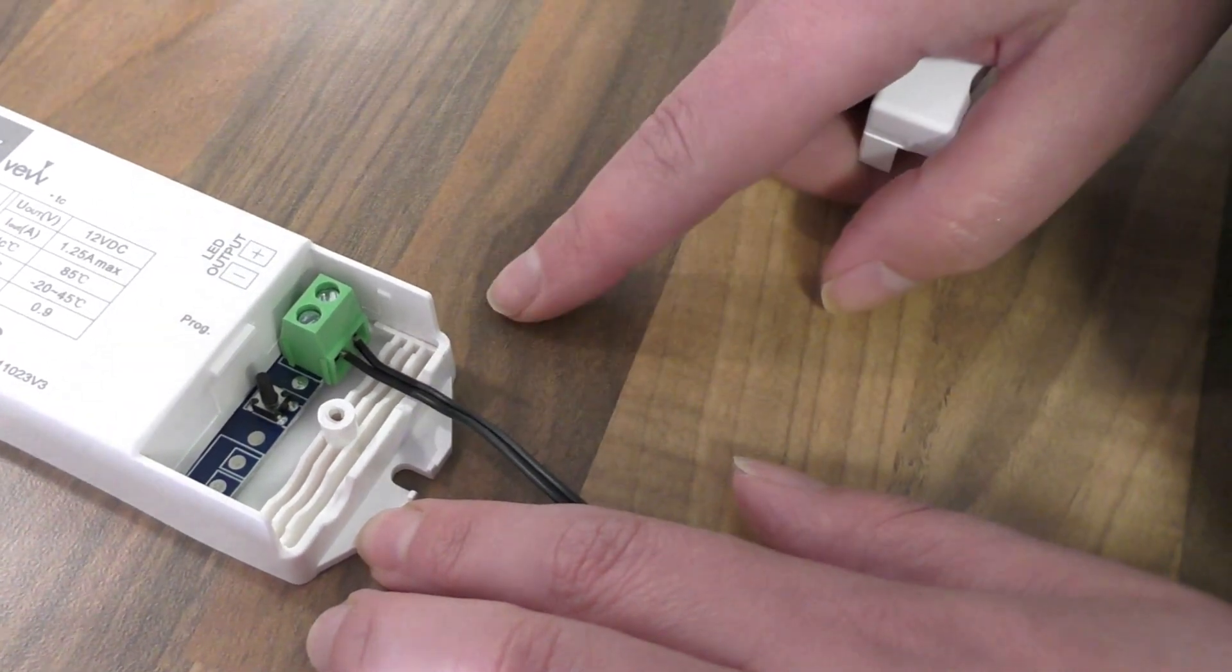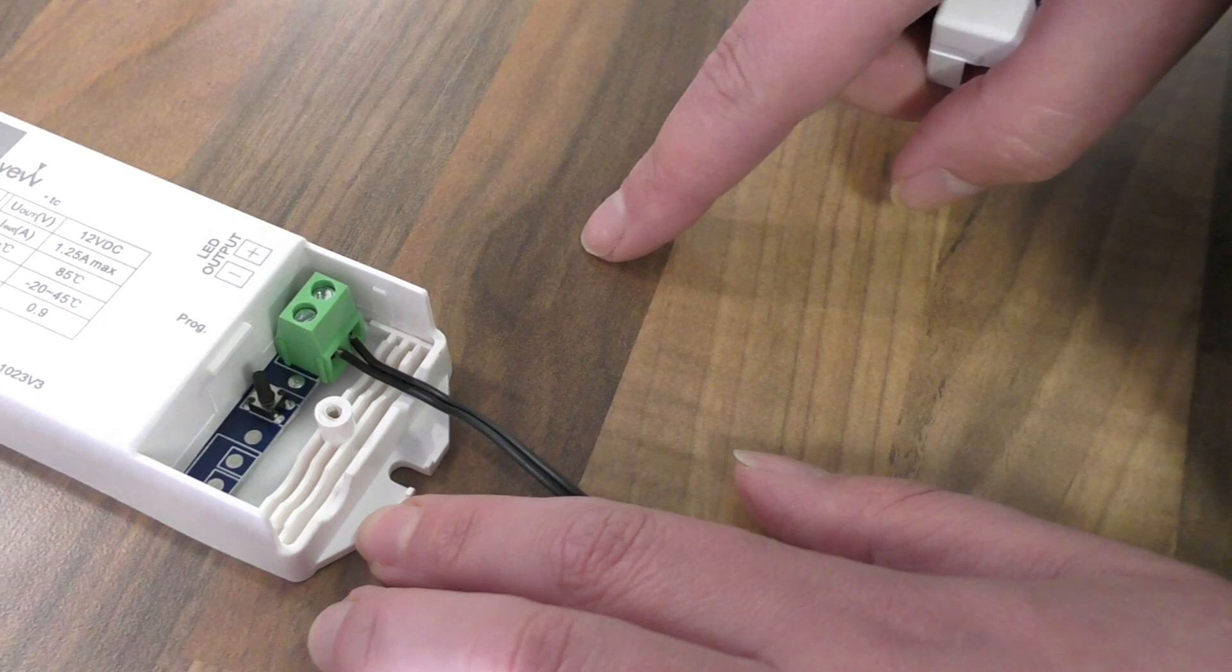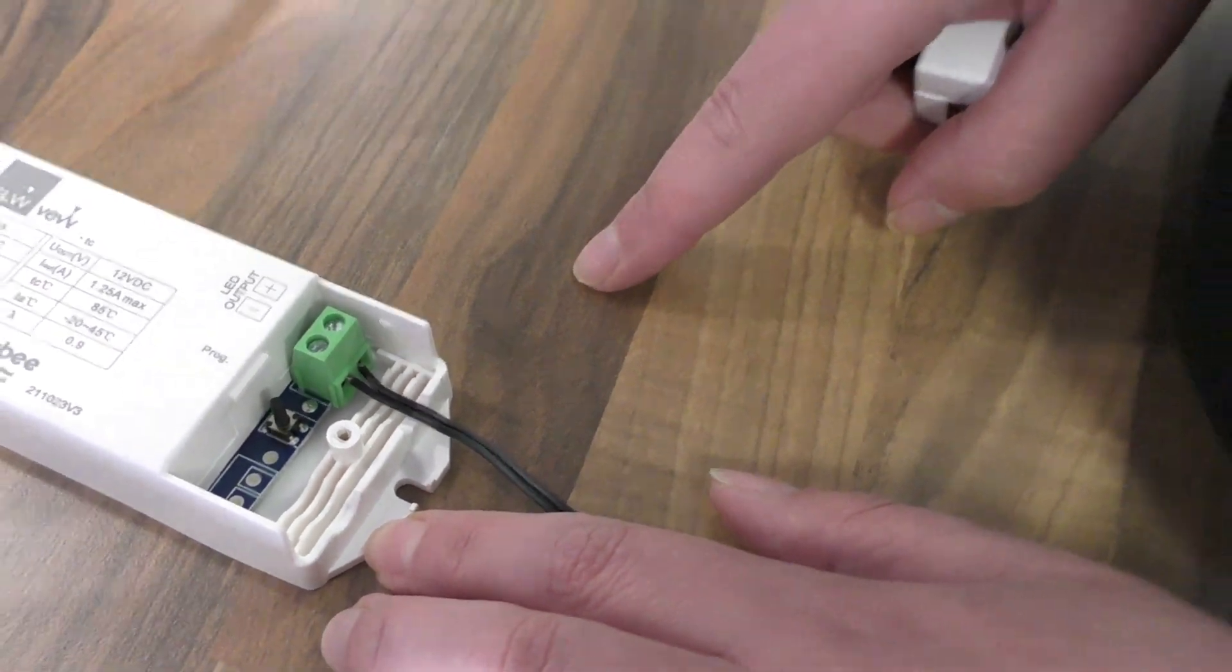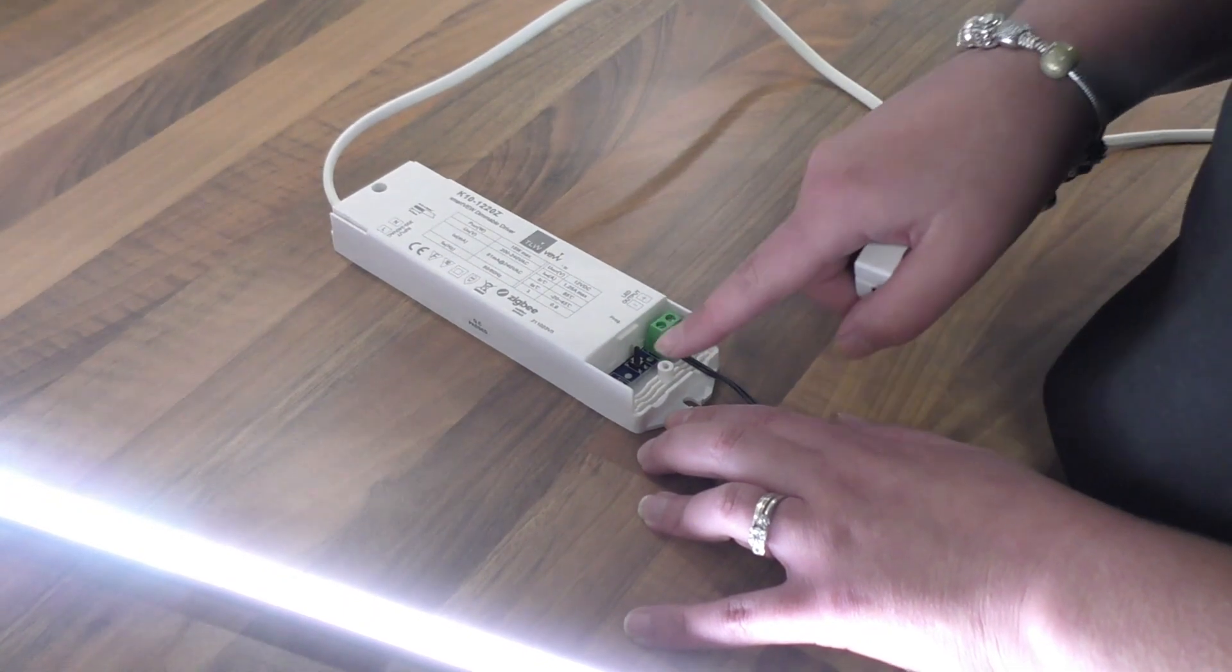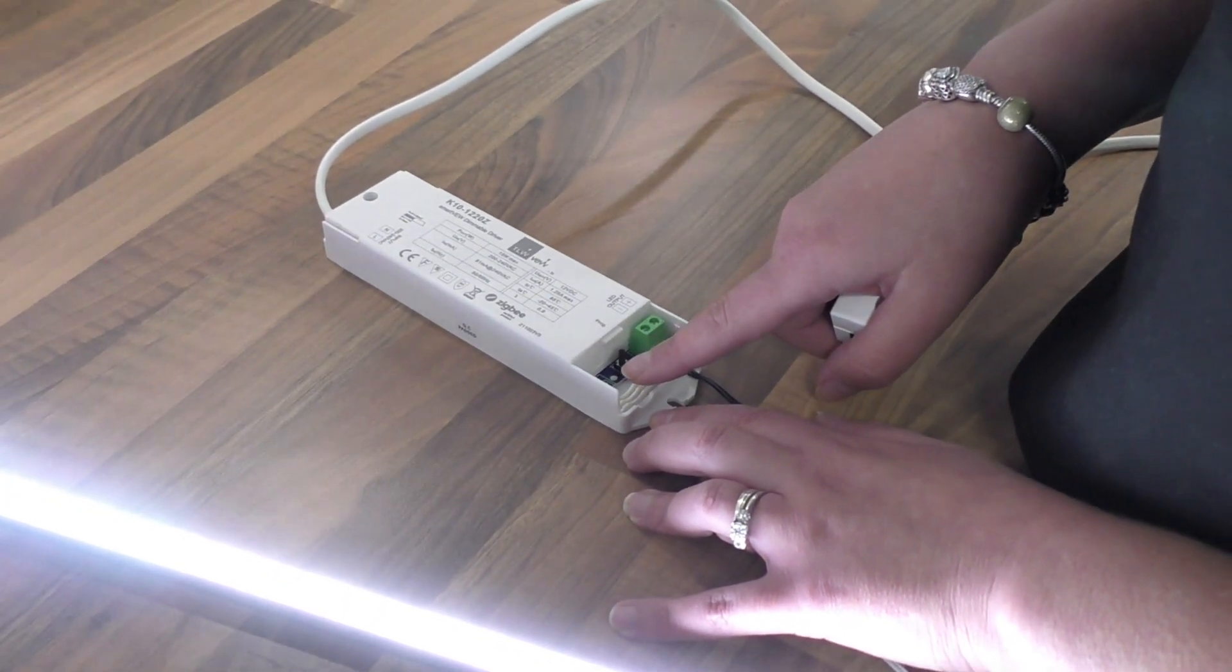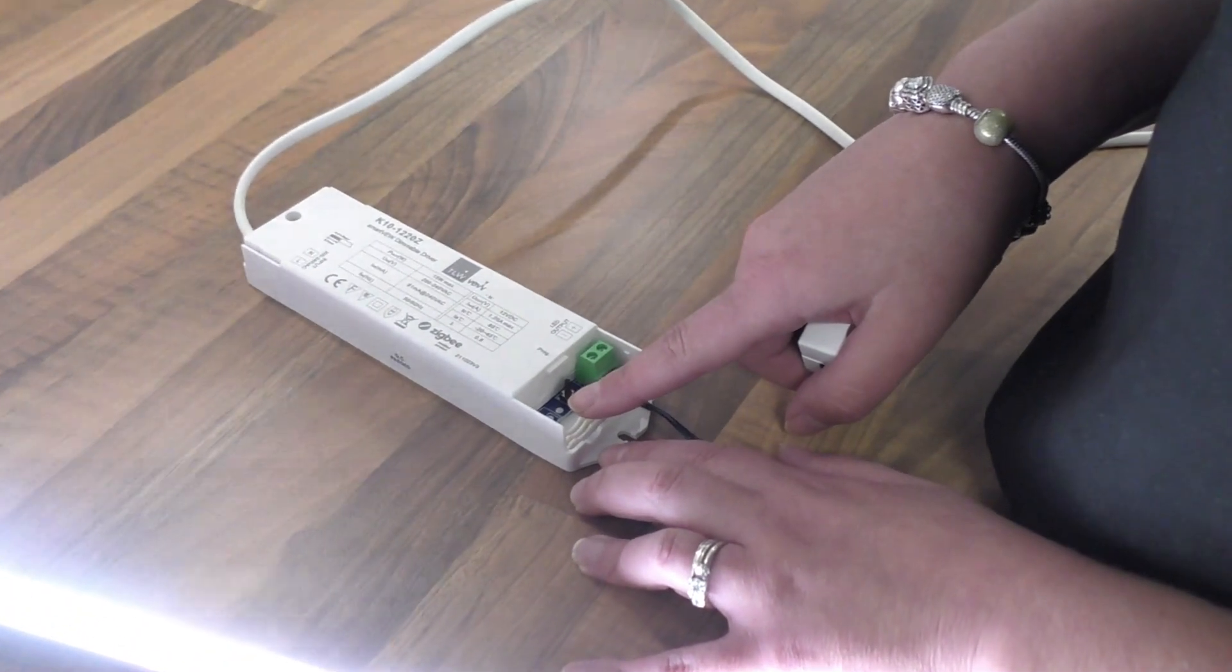To attach this to Alexa, you just say 'Alexa, discover new devices.' Starting discovery, this will take a few moments. Turn on your new devices now and if needed put them in pairing mode.